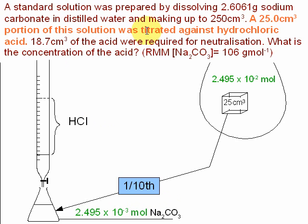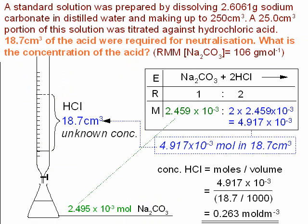The sodium carbonate solution was titrated — here's a titration apparatus — against hydrochloric acid, and there's the hydrochloric acid we're going to react against. The final line gives us the last piece of information and really poses the question: 18.7 cm³ of the acid were required for neutralization. So in the burette it was 18.7 cm³, and the question is: what is the concentration of the acid?